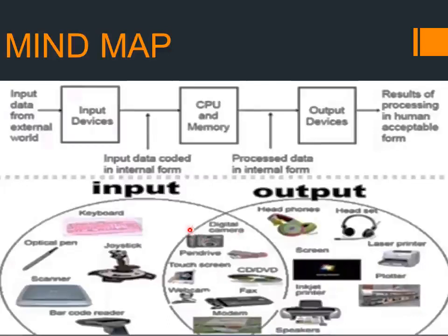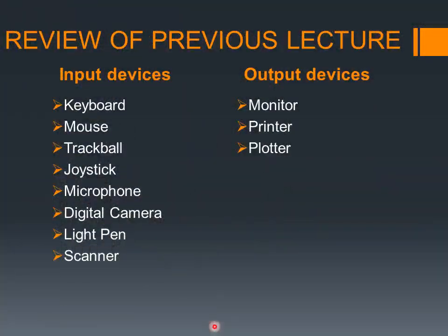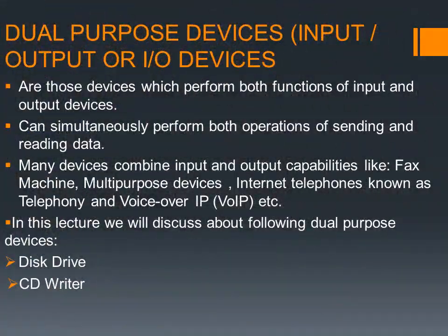Here you see input devices and output devices, which we studied earlier. But in the center you can see some devices which are called dual purpose devices, which we will study today. Here is the review of input devices and output devices which you studied in the previous lectures. Now we start from dual purpose devices, which is today's target — input output or IO devices.